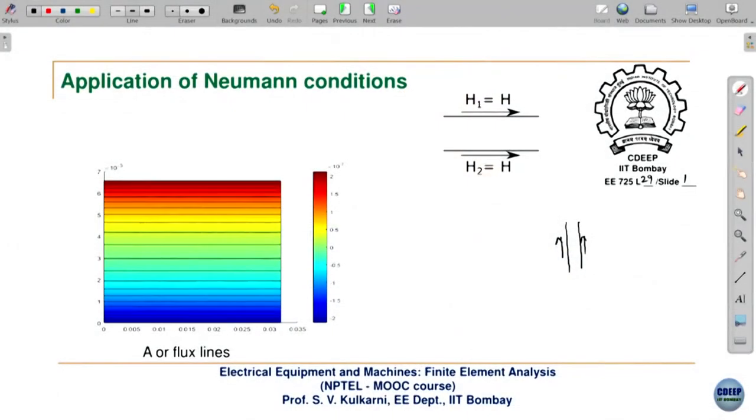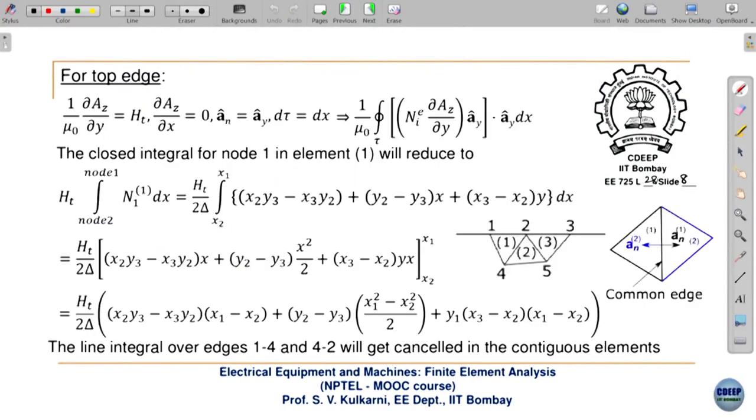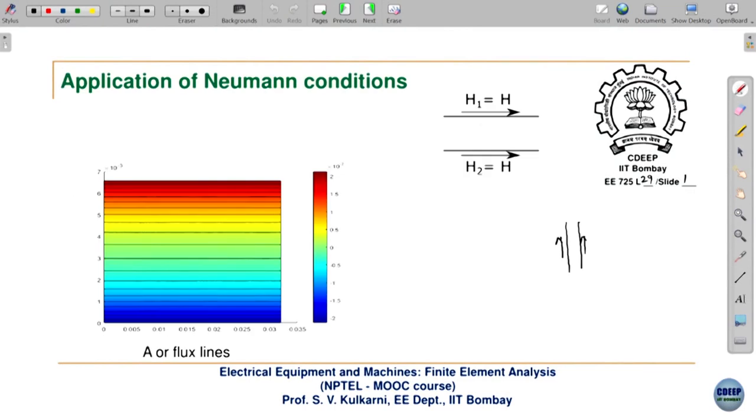This is the geometry and we are imposing this condition. When we do the coding using this formulation, there is no source current density J here. So the field distribution is obtained purely by virtue of the boundary condition. The right-hand side B matrix will be contributed only by the boundary term — there is no capital J entry, because there is no source current density.